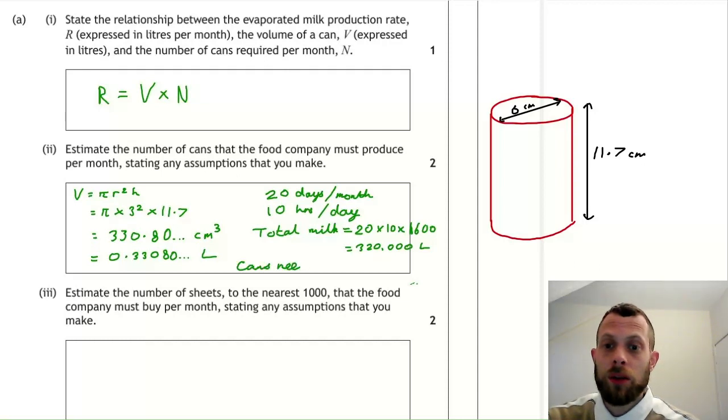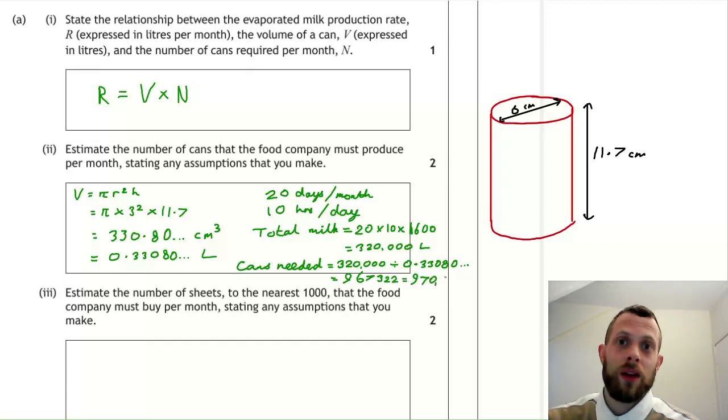So to find out the number of cans, we do 320,000 divided by 0.33080, and we get 967,322 cans. Now this is basically based on numbers we've just guessed, so it's not a precise estimate. So 970,000 cans as an estimate only.